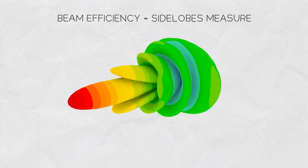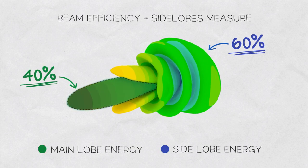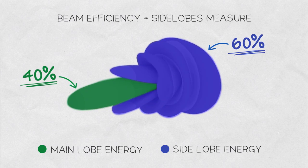For example, if the beam efficiency is 40%, it means the remaining 60% of the radiated energy goes into the side lobes.